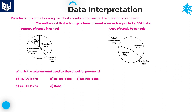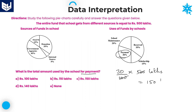Question four: what is the total amount used by the school for payment? Payment is 30% of total amount 500 lakhs. Two zeros cancel: 30 × 5 = 150 lakhs. The total amount for payment is 150 lakhs. Option C is the right answer for this question.